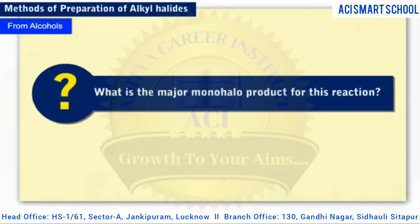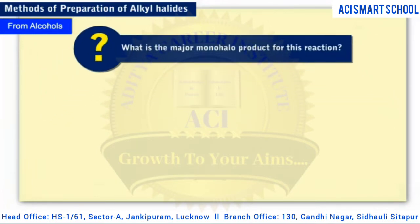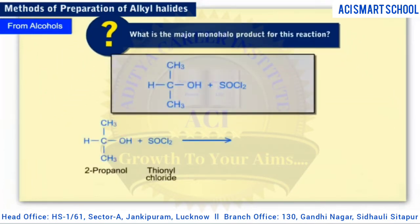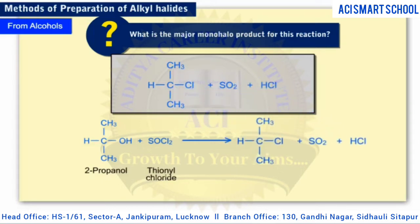Let's practice. What is the major monohalo product for the reaction shown here? You should recognize this type of reaction: a secondary alcohol reacting with thionyl chloride. One chlorine atom will replace the hydroxyl group to make 2-chloropropane. Sulfur dioxide and hydrogen chloride are the other products of the reaction.